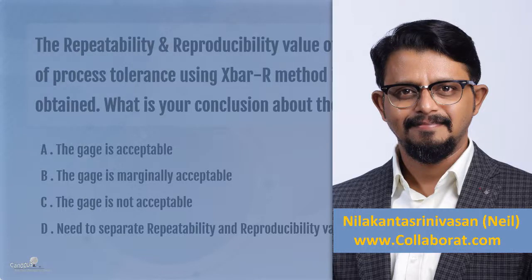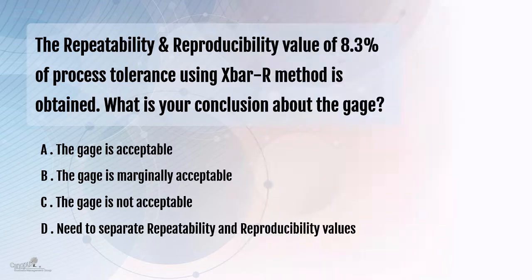This is another interesting question which relates to the concept of Gauge R&R. The question goes like this: the repeatability and reproducibility ratio of 8.3% of process tolerance using the X bar R method is obtained. Now, what is your conclusion about this gauge?